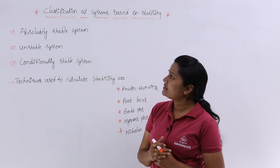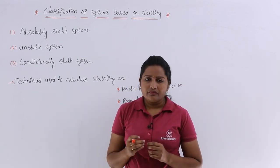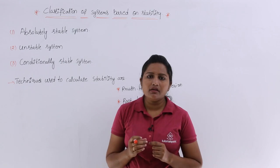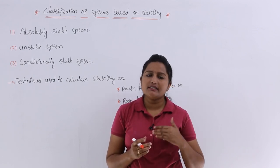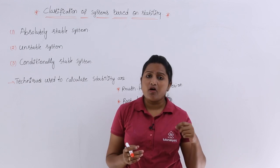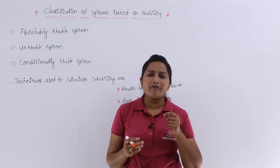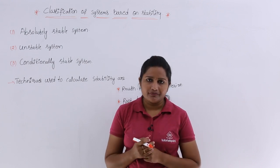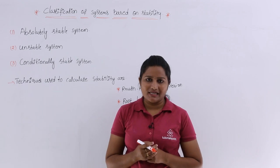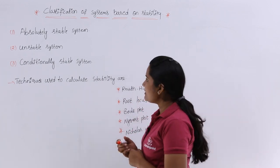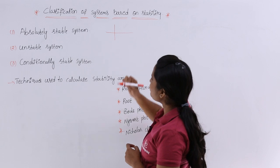An absolutely stable system is one which gets a stable output for variation of its parameters. That means for all variation of its parameters it is going to get a finite output. Then the system is said to be absolutely stable. For example, if you are having a system response like this.